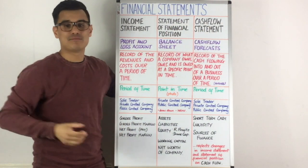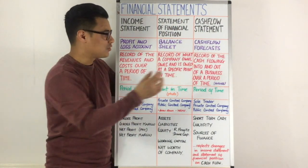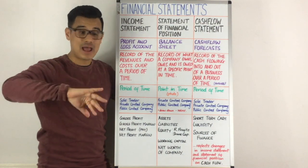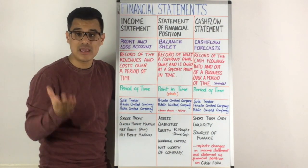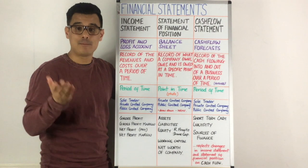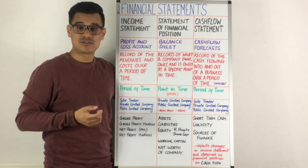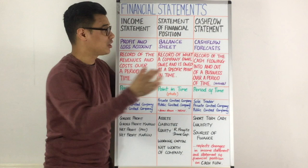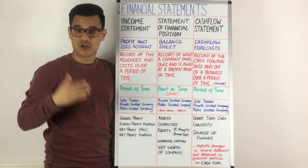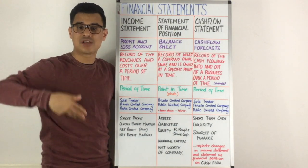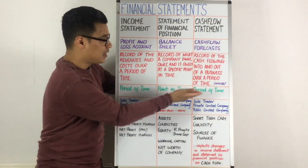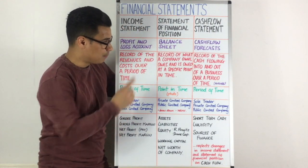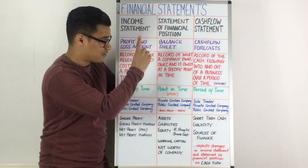The last statement is the cash flow statement. The cash flow statement is a record of the cash flowing into and out of a business over a period of time. Usually that period of time is looking into the future, and when it's looking into the future it's referred to as the cash flow forecast, because you're forecasting your cash flow. It's looking at a period of time, much like the income statement, but not like the statement of financial position.